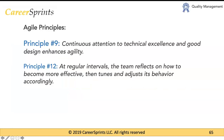Before we talk about the differences between how quality is managed in predictive versus agile projects, we first need to draw attention to some of the agile principles that make sense from a quality perspective. Principle number nine says continuous attention to technical excellence and good design enhances agility. This principle points to all the different technical practices in agile that can help you do proper testing or proper development within your sprint and produce value for your end user.